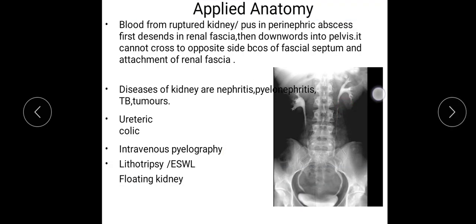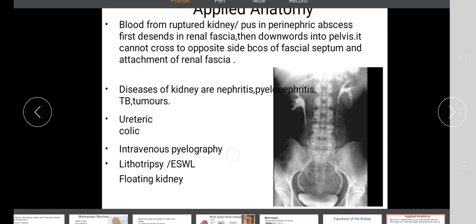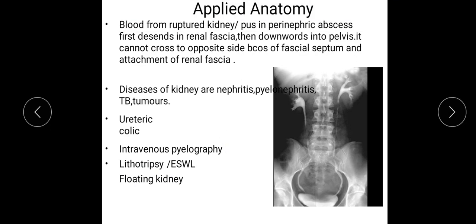Intravenous pyelography (IVP) is a contrast X-ray in which a dye is injected from the antecubital vein or any other vein of the hand, and X-rays are taken after half an hour as the dye circulates through the urinary system, showing the minor calyx, major calyx, renal pelvis, ureter, and urinary bladder.